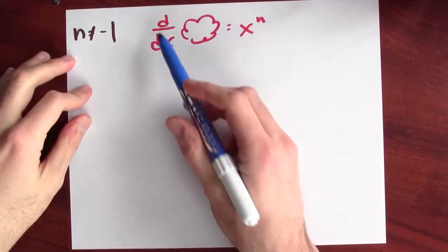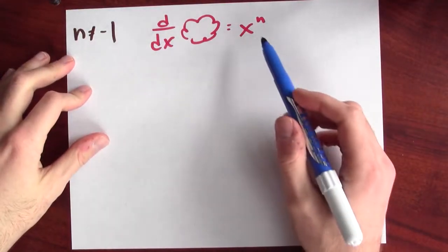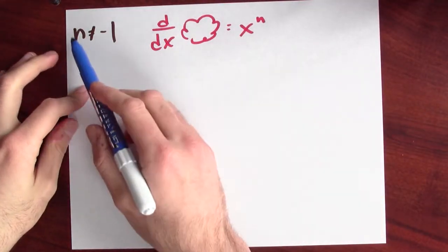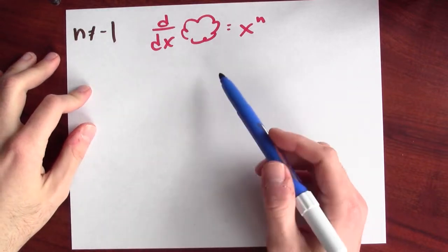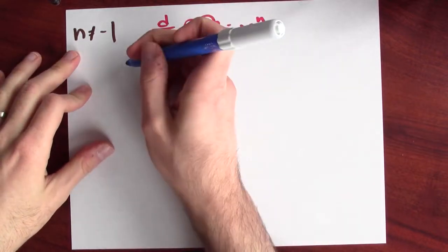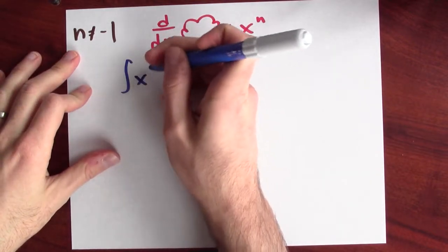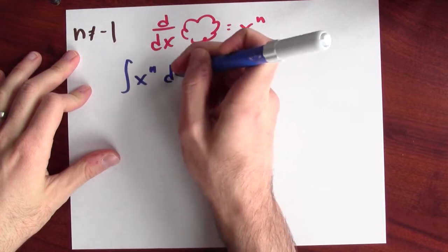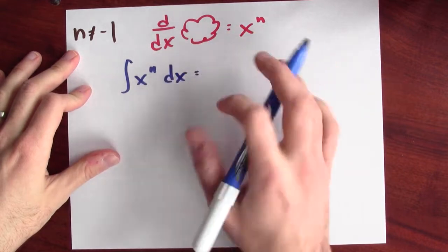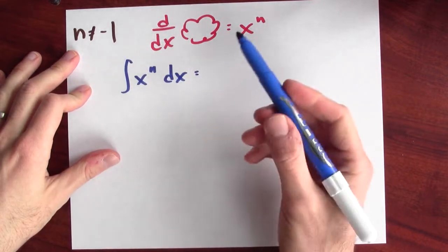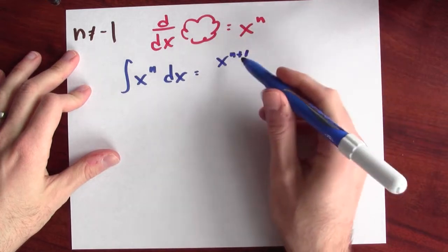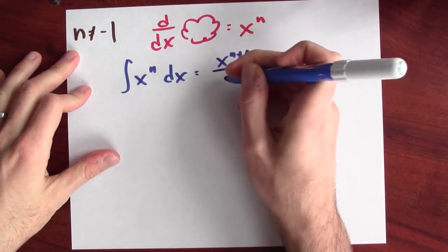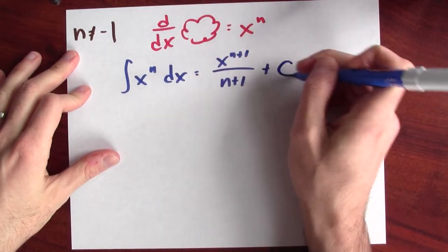What about the general case? I'm going to think about what would I differentiate to get x to the n, where n is some number but it's not negative 1. So I want to know what the anti-derivative of x to the n is — what would I differentiate to get x to the n? I'm going to claim that it's x to the n plus 1 divided by n plus 1.